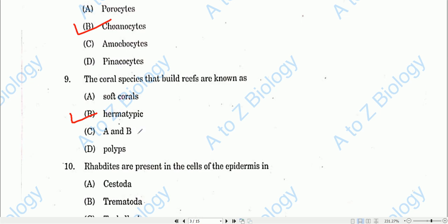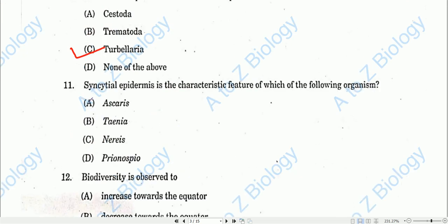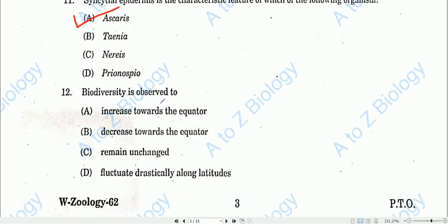Question number ten: Rhabdites are present in the cells of the epidermis in the case of Turbellaria, so option C will be the correct one. Question number eleven: Syncytial epidermis is the characteristic feature of Ascaris, so option A will be the correct one.